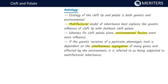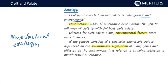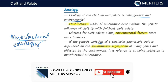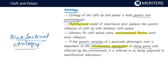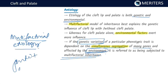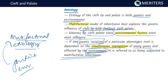The etiology of cleft lip and palate can be both genetic and environmental — this is called multifactorial etiology. Multifactorial means the genetic variation of a phenotypic trait is dependent on simultaneous segregation of many genes and is also affected by the environment. The multifactorial model best explains cleft lip with or without cleft palate, whereas for isolated cleft palate, environmental factors exert more influence.